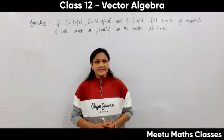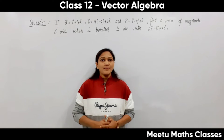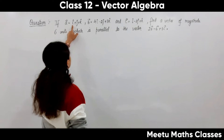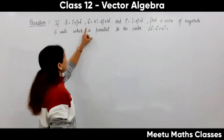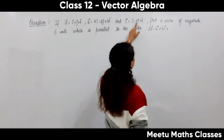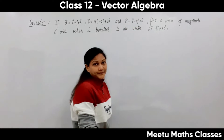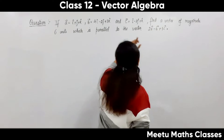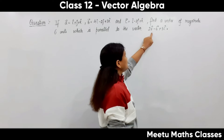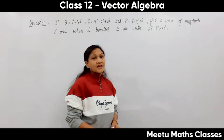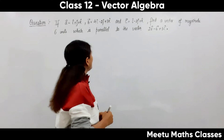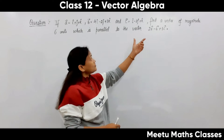Hello students, welcome to my maths classes. Today's topic is vectors and your question is: if vector A is given as i plus j plus k, vector B is 4i minus 2j plus 3k, and vector C is i minus 2j plus k, then find a vector of magnitude 6 units which is parallel to the vector 2A minus B plus 3C. So the required vector must have magnitude 6 units and must be parallel to this vector.